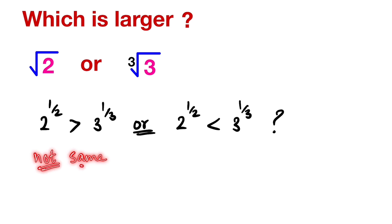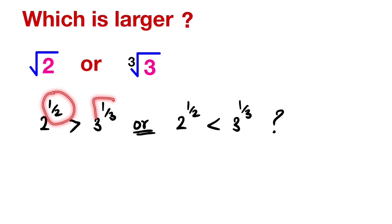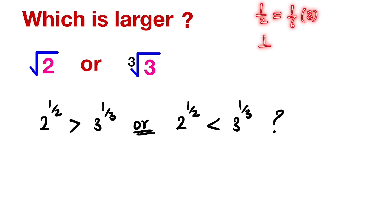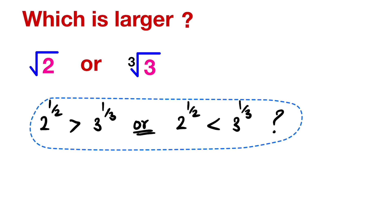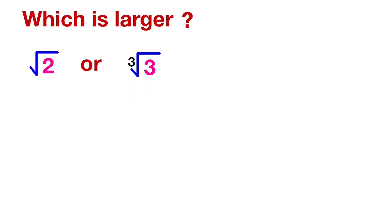Therefore we have to write these powers in such a way that we can compare the two numbers. For that, we can write 1 by 2 as 1 by 6 times 3, and similarly 1 by 3 as 1 by 6 times 2. So square root 2 equals 2 raised to 1 by 2, which equals 2 raised to 1 by 6 times 3.